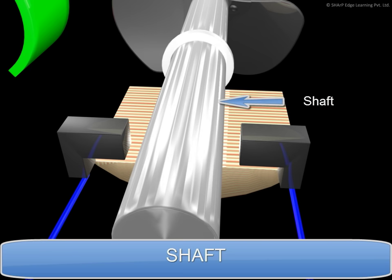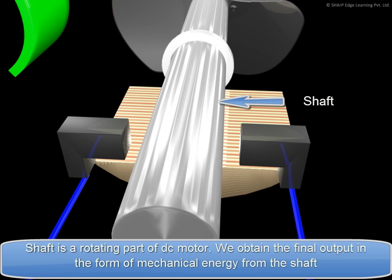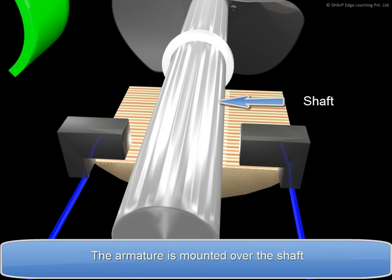Shaft. Shaft is a rotating part of DC motor. We obtain the final output in the form of mechanical energy from the shaft. The armature is mounted over the shaft.